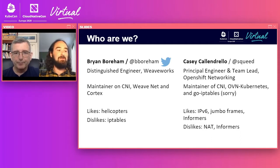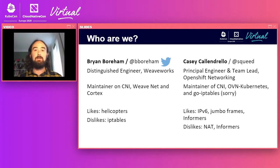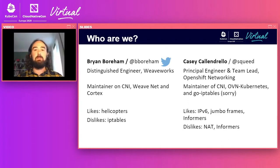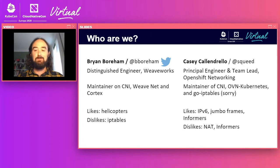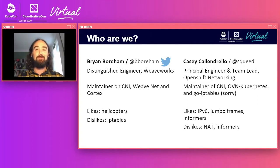I'm Casey Calandrello. I am an engineer at Red Hat, previously CoreOS. I work on Kubernetes networking, OpenShift networking, and the OVN Kubernetes project. I also maintain some utilities that people tend to use, like Go IP tables, for which I'm somewhat sorry. I like IPv6 and Jumbo Frames, and the Kubernetes Informer system, and I dislike NAT and the Kubernetes Informer system.